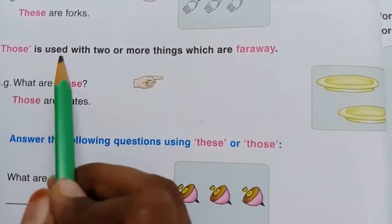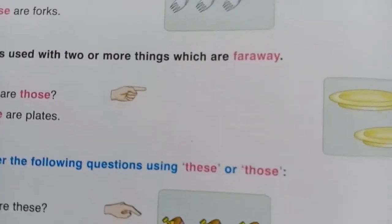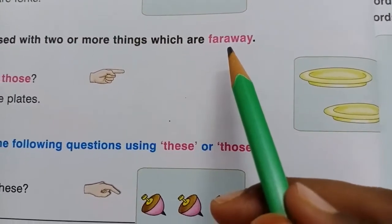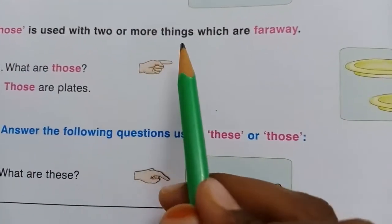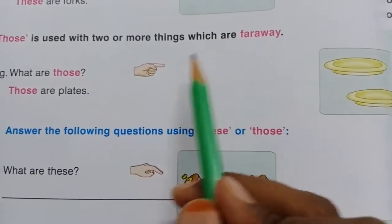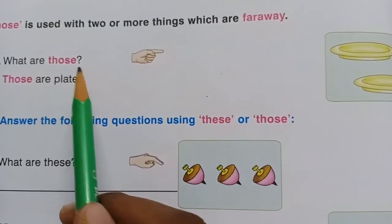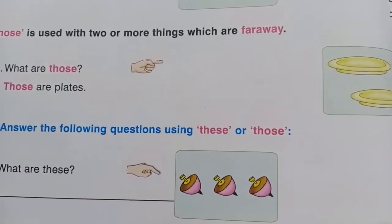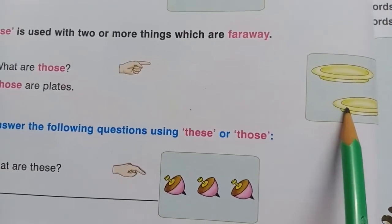'Those' is used with two or more things which are far away. So we use 'those' for plural things which are far away. For example, what are those? In the picture you can see — what are those? Those are plates.